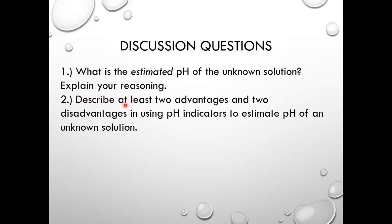Secondly, thinking about these pH indicators that we use in our experiment today, describe at least two advantages and two disadvantages to using pH indicators for this objective of estimating the pH of an unknown solution.